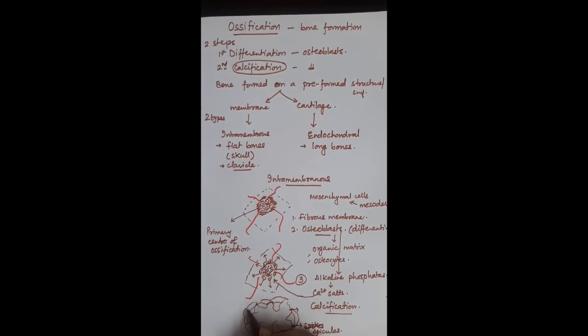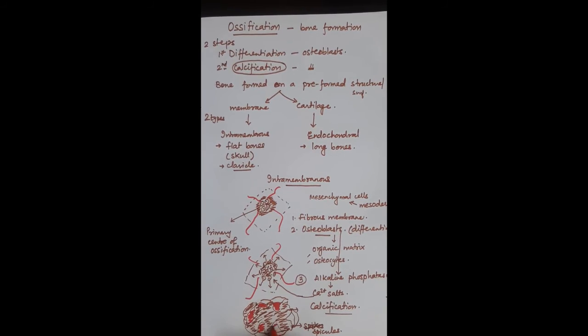So what do we get? We get a bone matrix where the osteocytes are present within the lacunae, and in between the bony tissue we start getting the bone marrow. So this is how we actually get the trabeculi and the bone marrow. That means first the type of bone which develops is the cancellous or the spongy bone.